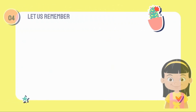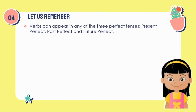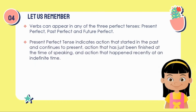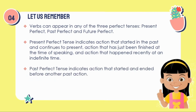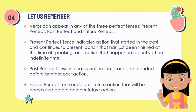Let us always remember that verbs can appear in any of the 3 perfect tenses: present perfect, past perfect, and future perfect. Present perfect tense indicates an action that started in the past and continues to the present, or an action that has just been finished at the time of speaking, or an action that happened recently at an indefinite time. Past perfect tense indicates an action that started and ended before another past action. Future perfect tense indicates a future action that will be completed before another future action.